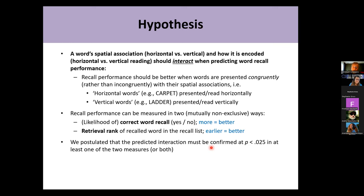We postulated that the predicted interaction must be confirmed at a p-value of 0.025, not the conventional 5% level, because we had two dependent variables and didn't fully insist that the effect should show up in both. When you don't insist on that, you have double the chance of committing at least one Type I error, and therefore we adjusted our p-values accordingly.